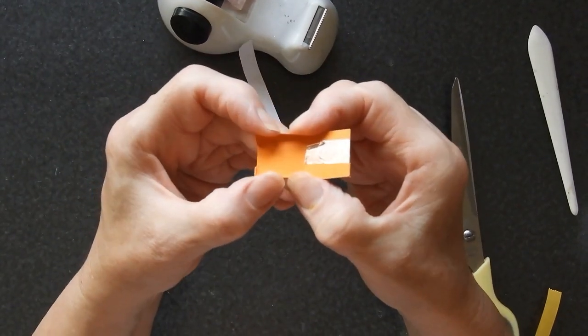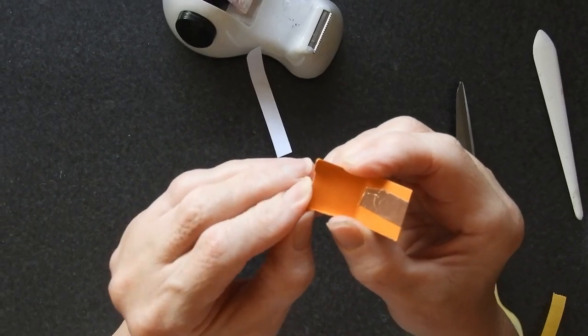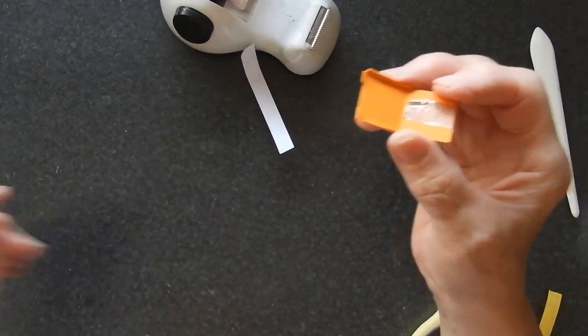These edges are just two millimeters deep, so they are very, very shallow, but they are enough to hold a CR2016 battery.